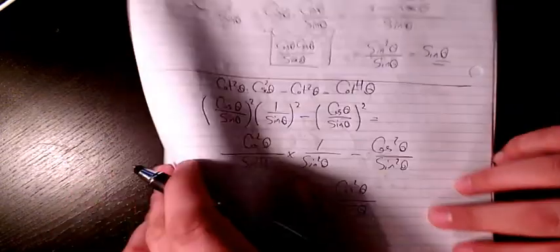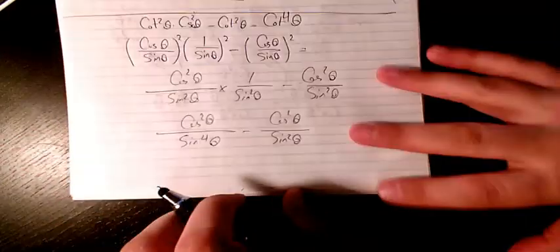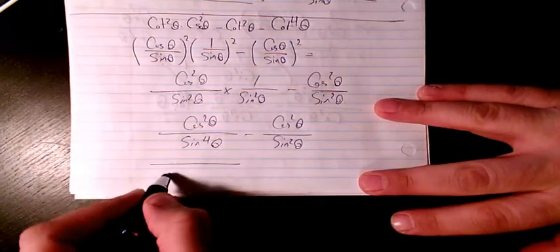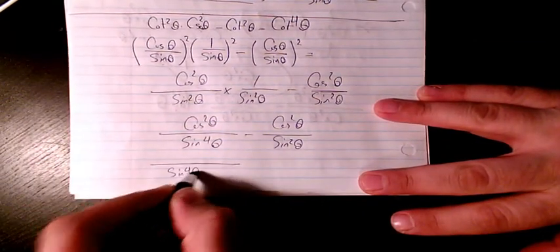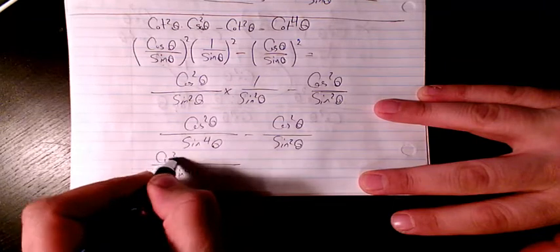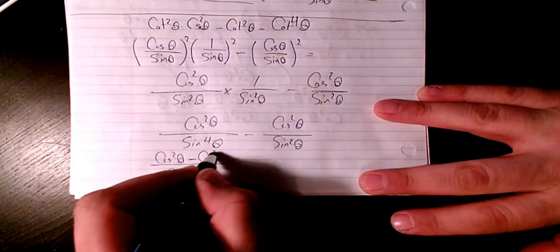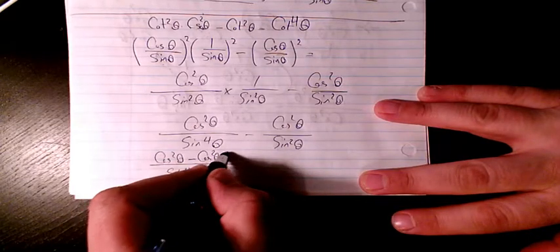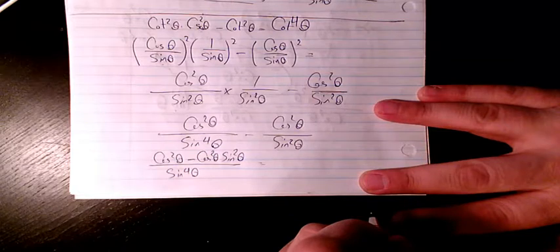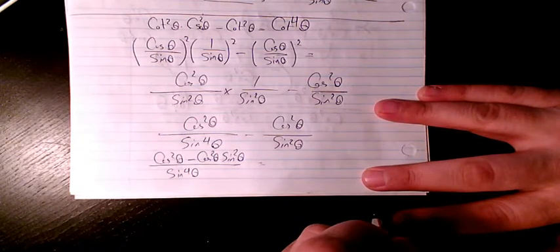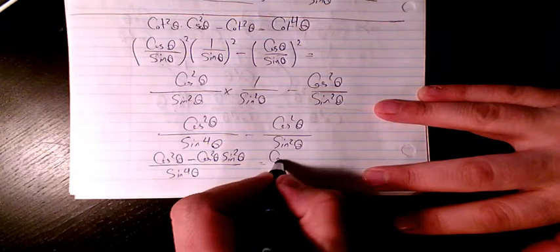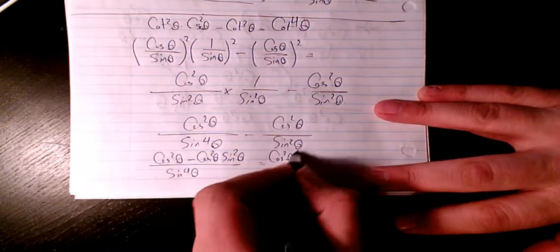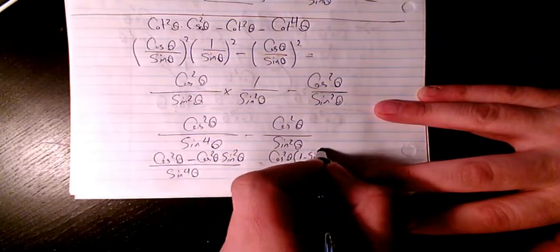In order to perform the subtraction, we need the same denominator. Writing both terms over sine⁴θ gives us cosine²θ over sine⁴θ minus cosine²θ·sine²θ over sine⁴θ. Then we factor out cosine²θ, giving cosine²θ times (1 - sine²θ) all over sine⁴θ.